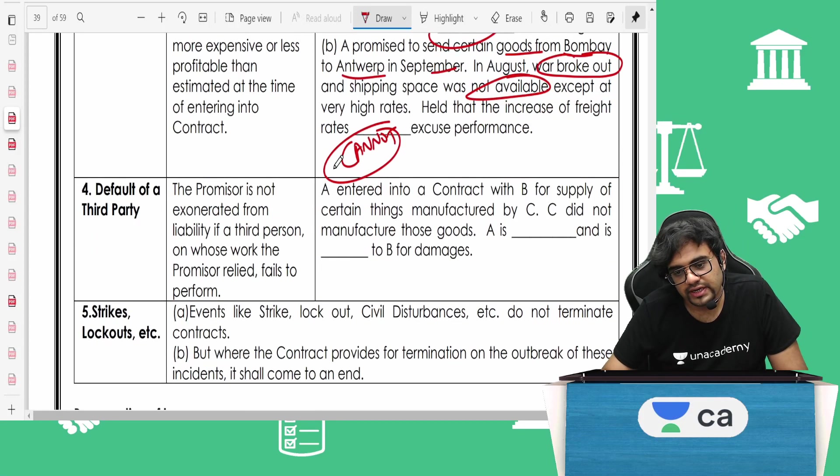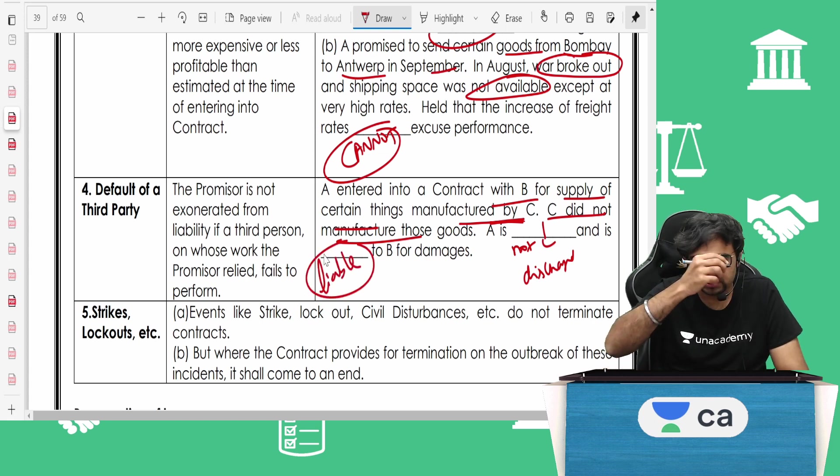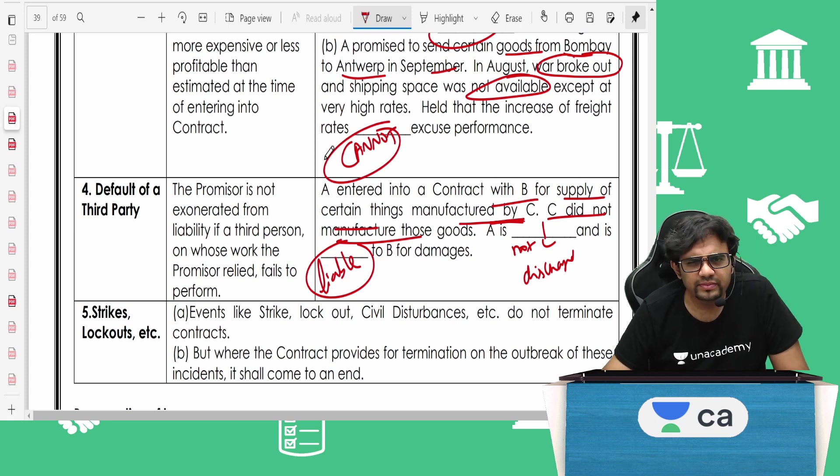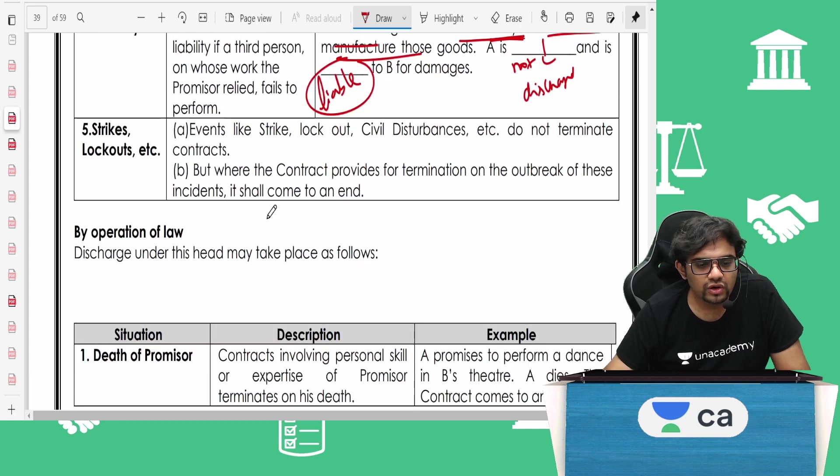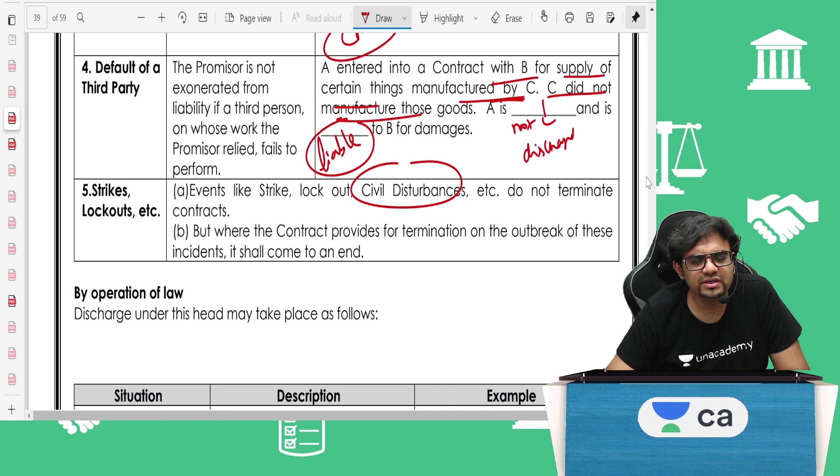Default of a third party. A entered into a contract with B for supply of certain things manufactured by C. I had ordered from C. Now, C did not supply those goods anymore. What can I do? Can I go to B and say sorry, that person did not pay? No. A is not discharged and is definitely liable to B for damages. Then we have strike, lockout, etc. If there is a strike, lockout, civil disturbances, I don't care. It will not disturb. I don't care what happens about the strike. It should not affect my contract in any way. If it affects my contract, then I can't help it.